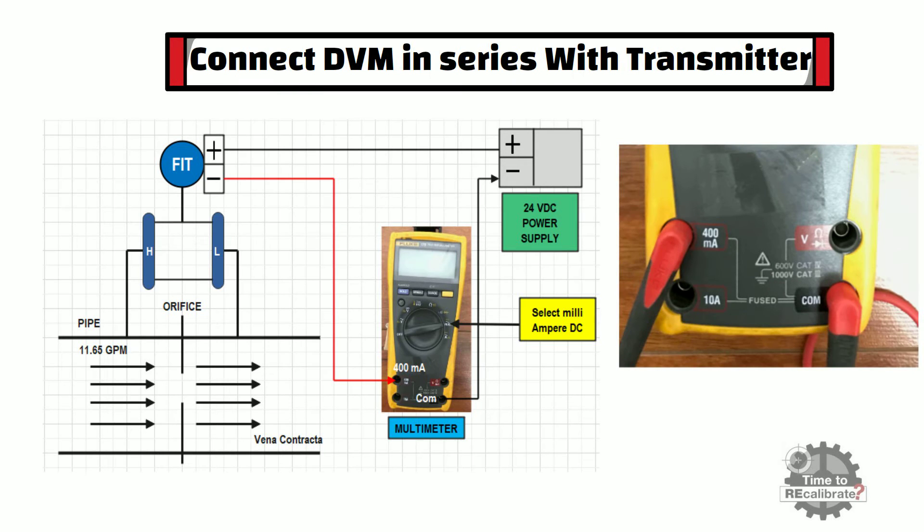To put multimeter in current measuring mode, connect red probe to 400 mA port and black probe to common port of multimeter.